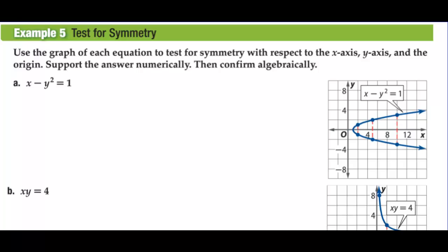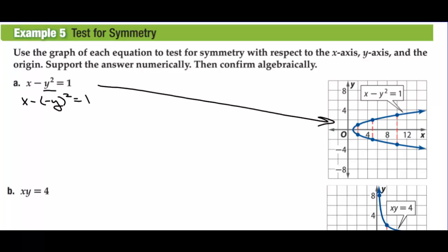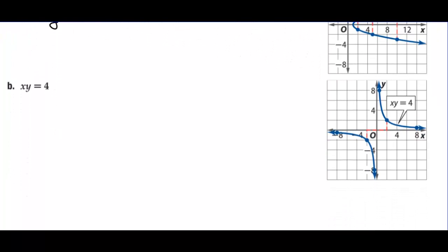Use the graph of each equation to test for symmetry with respect to the x-axis, y-axis, and origin. For x minus y squared equals 1, we can see it is symmetric over the x-axis. Plugging negative y in for y, negative y squared equals y squared, so we get the same equation — confirmed. For the second graph, symmetric about the origin: plugging in negative x and negative y, a negative times a negative is positive, giving the exact same equation.